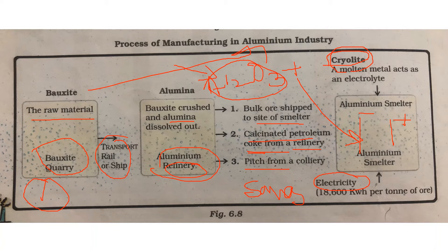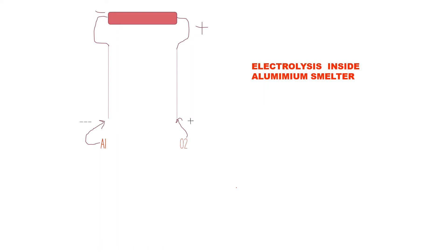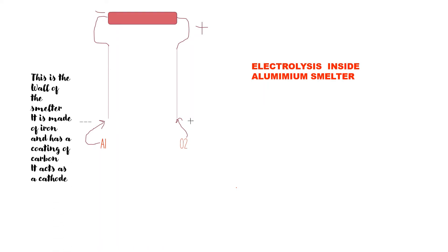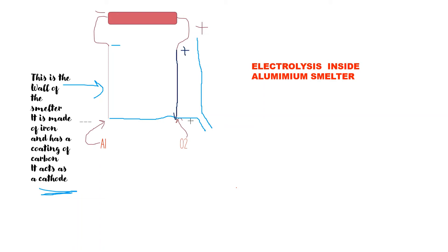Now let's learn about the electrolysis taking place inside an aluminium smelter. The wall of the smelter is made of iron with a coating of carbon — it acts as the cathode, which is the negative terminal. The base of the smelter is also shown here. On the other side, there is the anode, which is a positively charged graphite electrode.